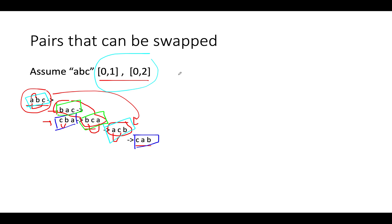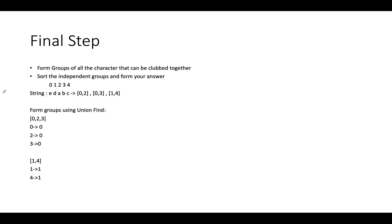Now let's take a different example to understand the full algorithm. The input string is 'edabc' and the pairs are [0,2], [0,3], and [1,4]. The lexicographically smallest string would be 'acbed'. You can verify this on LeetCode. From our previous analysis, we should form groups — and the best way to do that is Union Find.